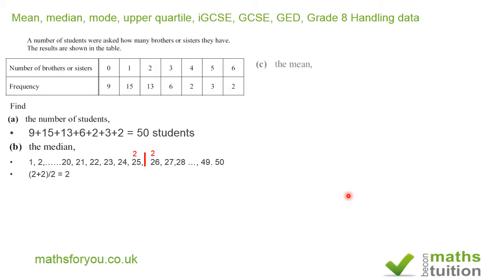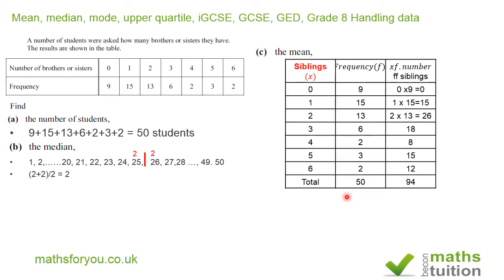Next we're supposed to find the mean. Now for this I've drawn three columns: a column for siblings, a column for frequency, and a column for the product of the siblings and frequency. Because the total column will give us the number of students in each category.